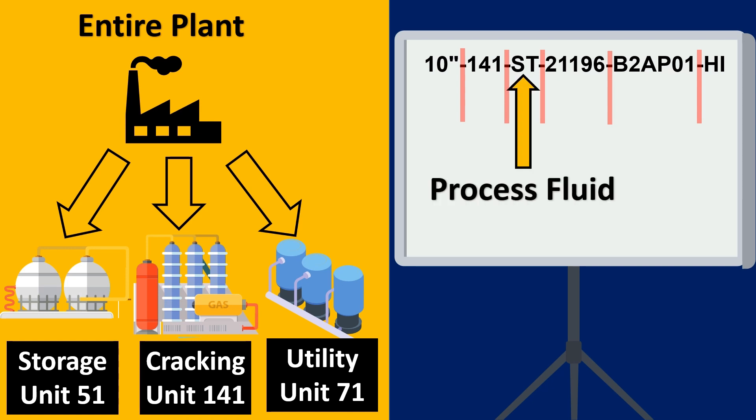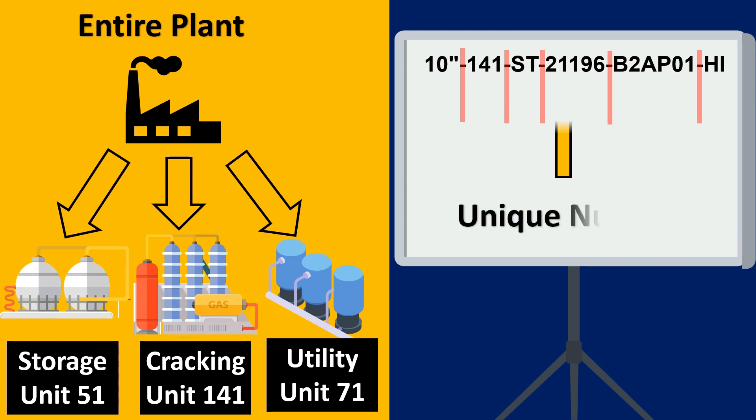The next important thing is the process fluid. So here it mentions ST, which stands for steam. So whatever is the process fluid that the line is carrying, a short form is usually mentioned here. This is a general practice. Project to project it might differ but this is usually the general practice used for making a line number.